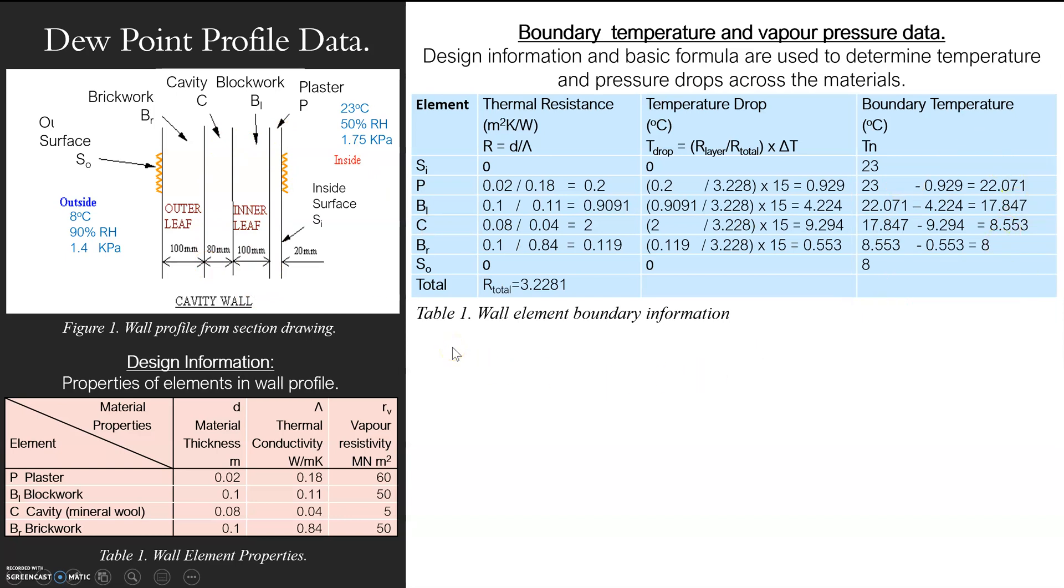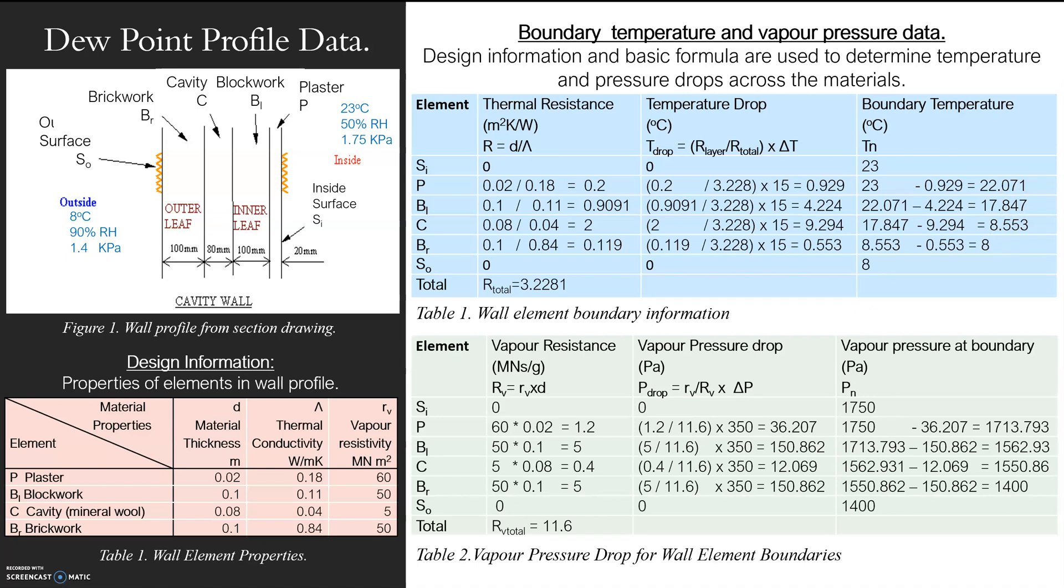So once we've done that, we literally apply it to vapor. We do exactly the same process with vapor. All we do with vapor, because we've already got the resistance, it's not the conductivity of vapor, it's the resistance. We've already got that. All we're doing is timesing that by the depth for us to get the resistance.